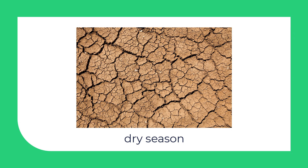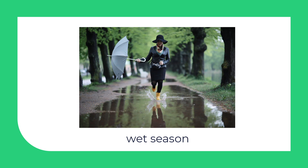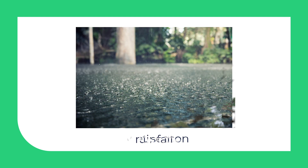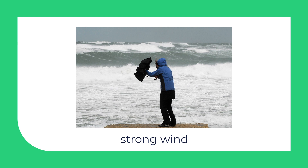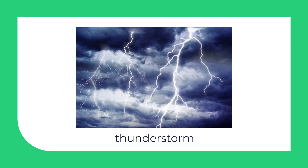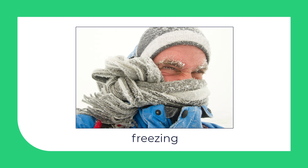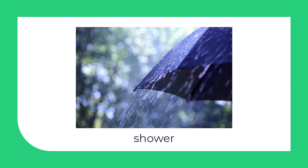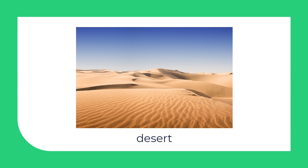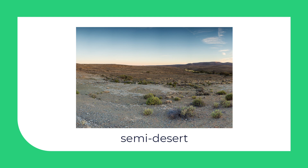Before we start, we need to learn some words. Dry season is any season in which little rain falls. Rainfall is the amount of water falling in rain and snow within a given time and area. Strong wind is wind that moves with great force. Thunderstorm is a storm with thunder and lightning. Freezing means extremely cold. Shower is a short period of rain or snow. Desert is a large area of land where it is always very dry, there are few plants and there is a lot of sand or rocks. Semi-desert is an extremely dry area characterized by poor vegetation.